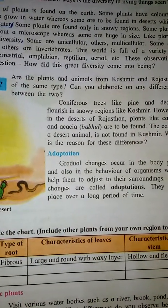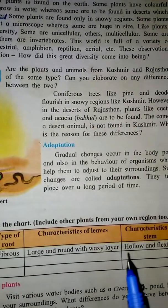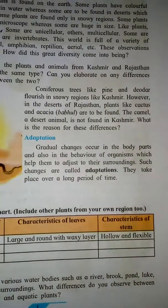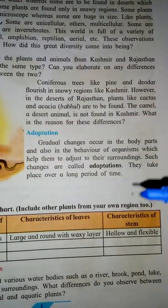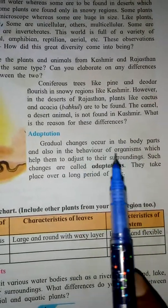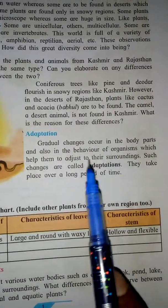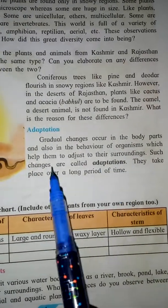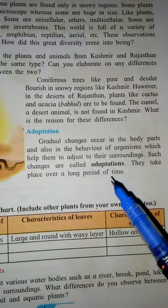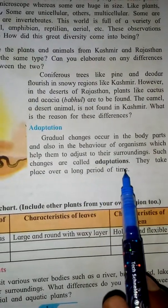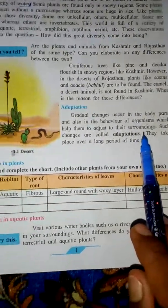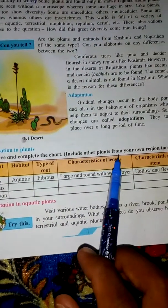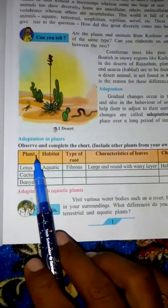Students, whatever situation we are in, the growth of the body — the plants grow as the atmosphere is available, and the organs grow as well. We can change with the surrounding — the body changes as an adaptation. Now observe and complete these charts, including plants from our own region.